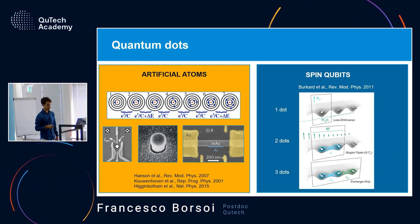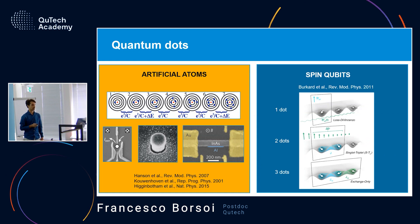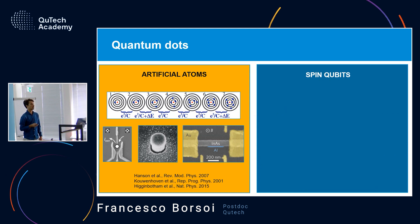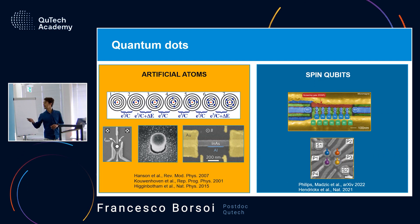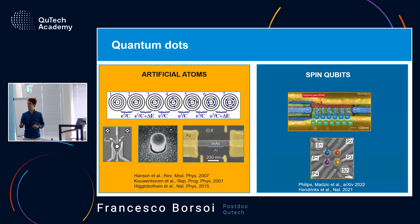In exchange-only qubits, one simply applies square pulses on the barriers between quantum dots. In our division we mainly focus on the Loss-DiVincenzo type spin qubits. The largest implementations so far include a linear six-qubit array in strained silicon and a two-by-two array in germanium, on which universal control of six and four qubits has been demonstrated.